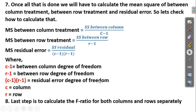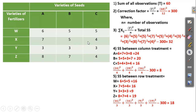The last step is to calculate the F ratio for both columns and rows separately. If you haven't understood what I just said, don't worry — let's solve a practical problem along with the steps we just studied.